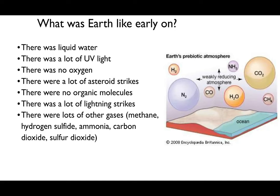Looking at all these conditions: there was some liquid water, lots of ultraviolet light, the early Earth was anaerobic—meaning there was no oxygen—lots of asteroid strikes, no organic molecules for microbes to eat, lots of lightning, and other gases including methane, hydrogen sulfide, ammonia, carbon dioxide, and sulfur dioxide.